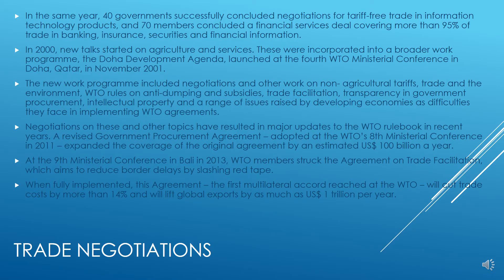In the same year, 40 governments successfully concluded negotiations for tariff-free trade in information technology products, and 70 members concluded a financial services deal covering more than 95% of trade in banking, insurance, securities, and financial information. In 2000, new talks started on agriculture and services, which were incorporated into a broader work program — the Doha Development Agenda — launched at the fourth WTO Ministerial Conference in Doha, Qatar in November 2001.